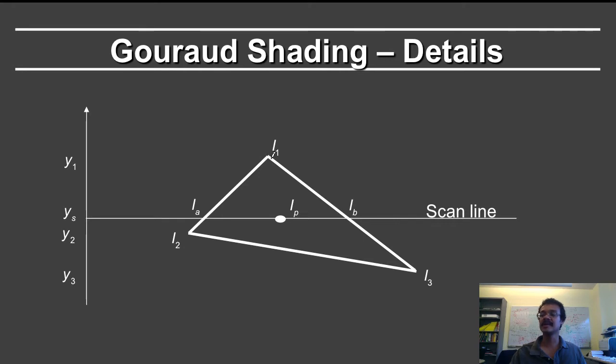Notice that the vertical extent goes from y1 all the way to y3. So we want to find first, to find the color of iP, we first want to find the colors at iA and iB, and then we want to interpolate them. So let's first talk about the color at iA.